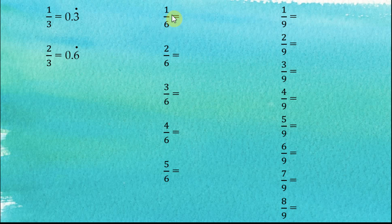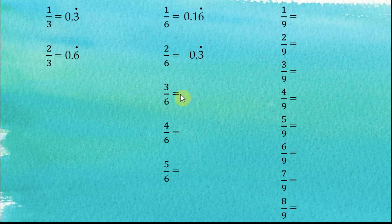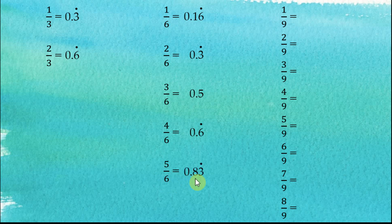How about 1 over 6? 1 over 6 is equal to 0.1̄6̄ recurring. Take note that only the 6 is recurring; 1 does not repeat. 2 over 6 equals 1 over 3, and therefore 0.3 recurring. 3 over 6 equals 1 over 2, which is 0.5. 4 over 6 equals 2 over 3, and therefore 0.6 recurring. And 5 over 6 is equal to 0.83 recurring — take note that only the 3 is recurring; 8 does not repeat.